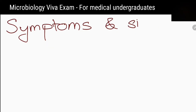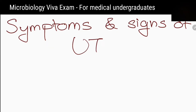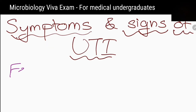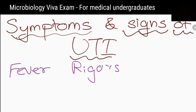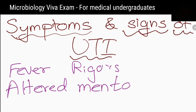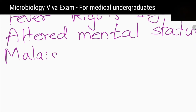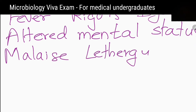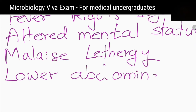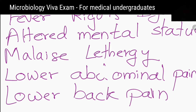What are the symptoms and signs of urinary tract infection? Fever, rigors, altered mental status, dysuria, malaise, lethargy, lower abdominal pain, and lower back pain.